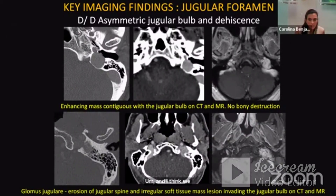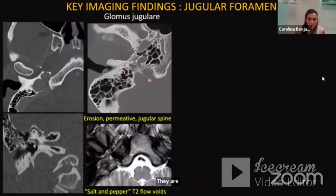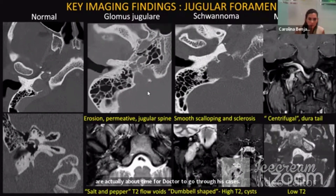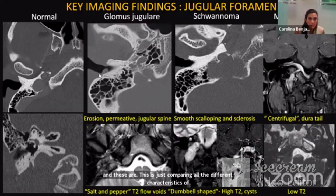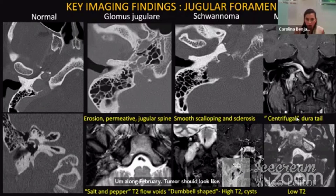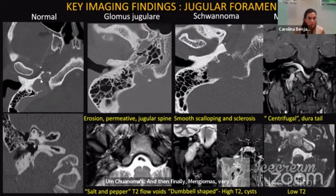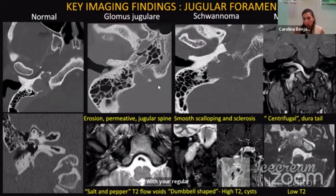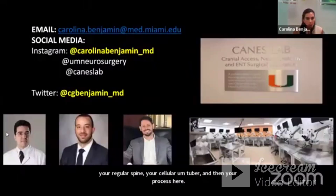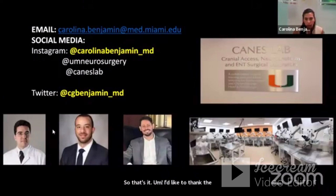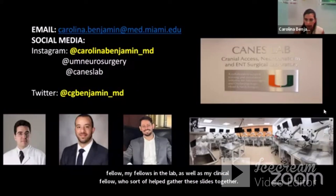In summary, a comparison slide shows what normal anatomy should look like versus glomus jugulare tumors, schwannomas, and meningiomas. It's important to keep track of normal anatomy — your jugular spine, jugular tubercle, and jugular process. Thank you to the lab and my fellows who helped gather these slides. Happy to answer any questions.